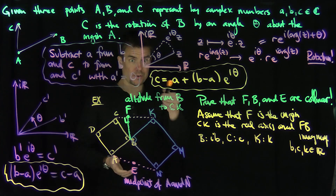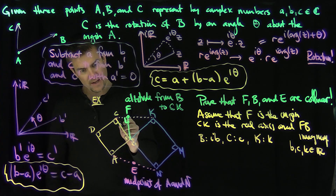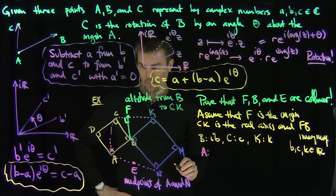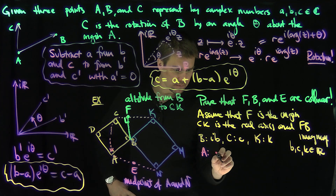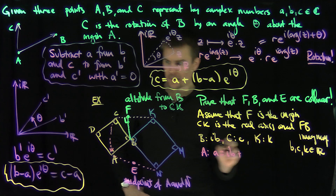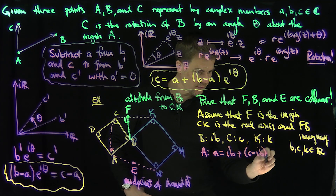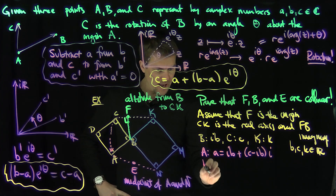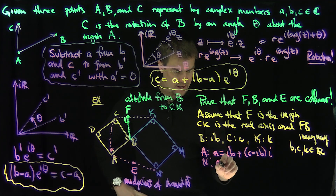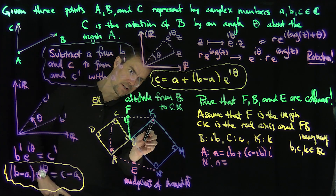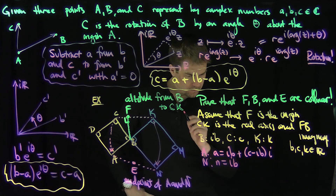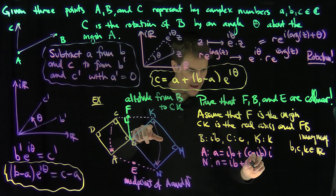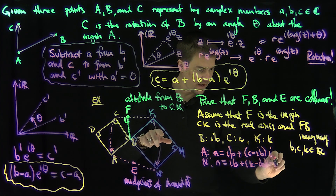Now I can use our rotation result. A is what we get if we rotate C by 90 degrees with B as the center. So A equals iB plus (C minus iB)·i, which gives A = iC + B(i + 1). For N, I rotate K by negative 90 degrees about B, so N equals iB plus (K minus iB)·(negative i), which gives N = negative iK + B(i minus 1).